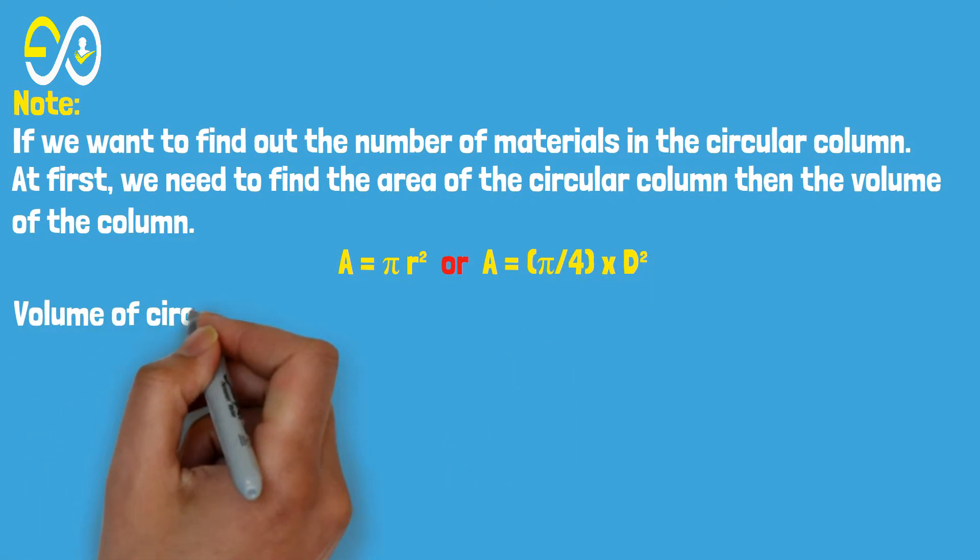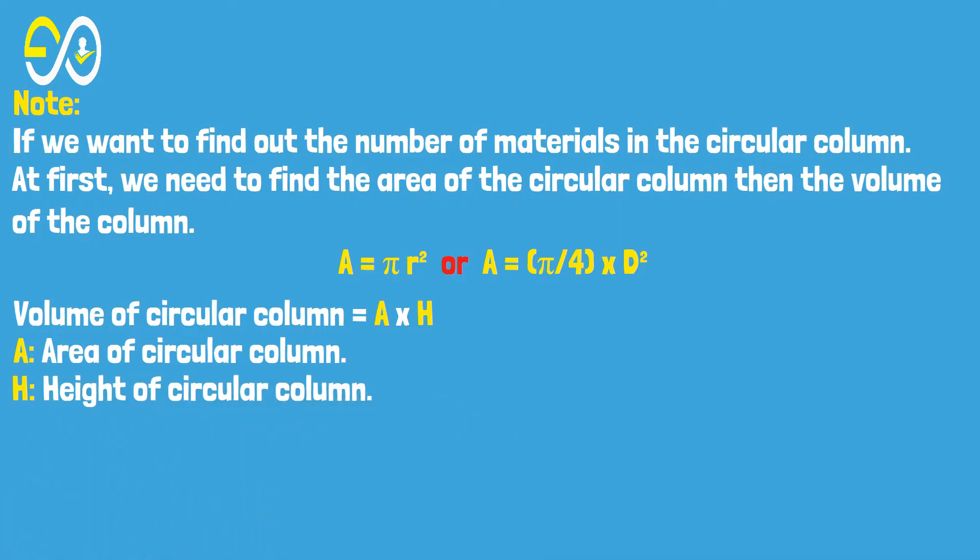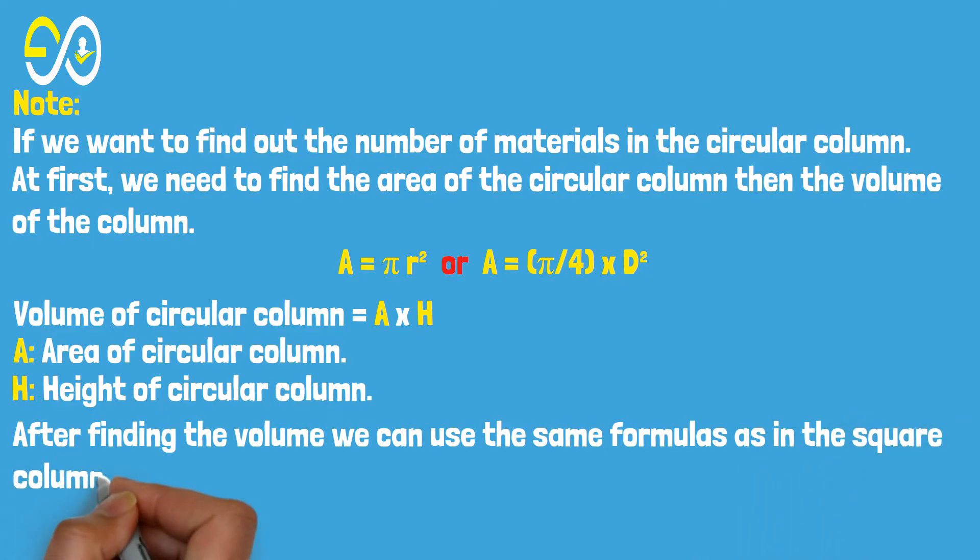Volume of circular column equals A times H, where A is the area of the circular column and H is the height of the circular column. After finding the volume, we can use the same formulas as in the square column to find out the materials in the RCC column.